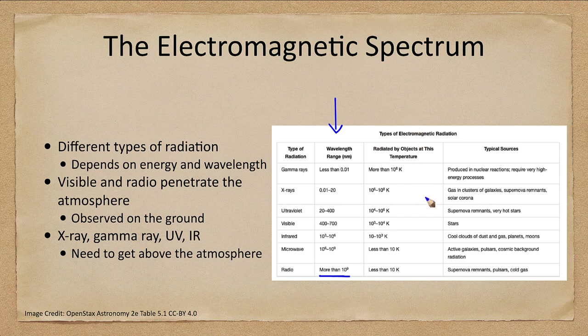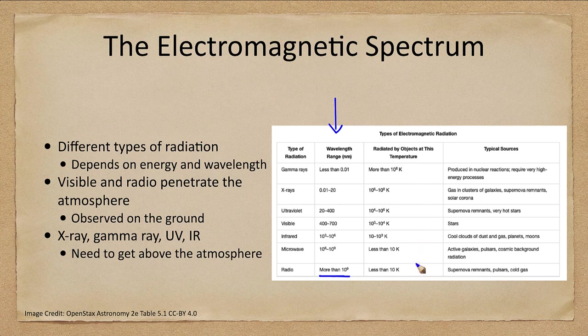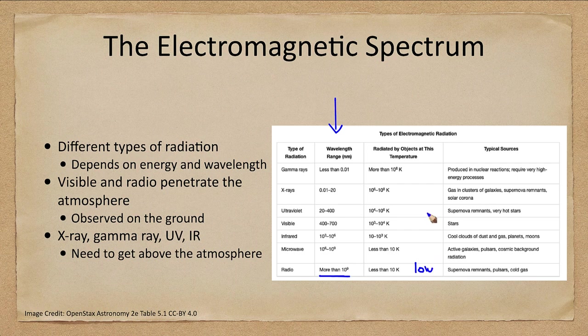What kind of objects radiate these? Well, it depends on the temperatures. So these are low temperatures down here that radiate radio waves and high temperature objects give off gamma rays.